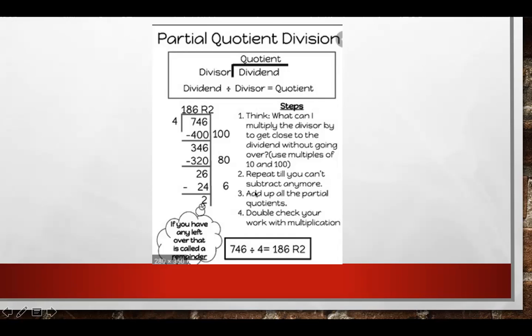Then, this third part where it says add up all the partial quotients. We have 100 plus 80 plus 6. So, we have 186 added together and 2 remainder. So, if we double check our work, or rather we would double check our work with multiplication. And then, you see it explained here once more.